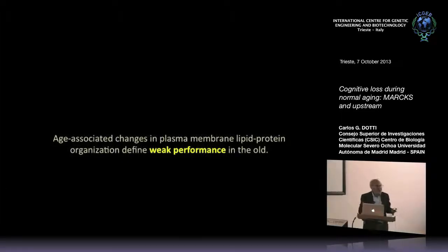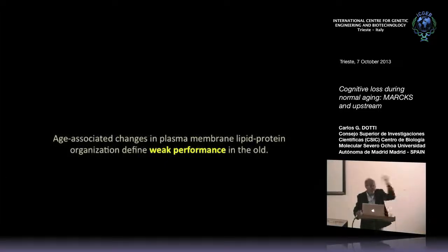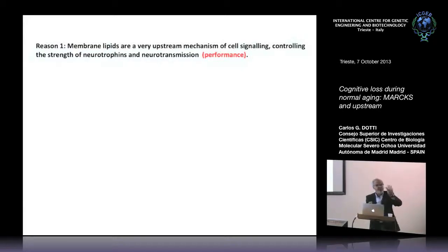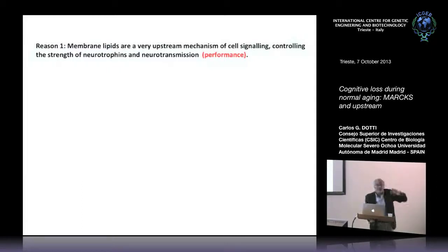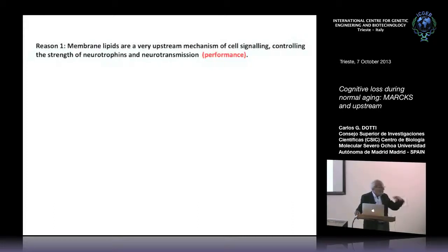It's very simple — people take advantage of things that are part of their past. In my case I have a background on lipid plasma membrane organization during brain construction, so I'm going to look into the deconstruction. Reason number one for choosing lipid membrane domains and organization during aging as a possible responsible element in cognitive loss is that plasma membrane events are very upstream. Neurotransmitter receptors are plasma membrane receptors, and these platforms are involved in cell signaling, controlling the strength of neurotrophins and neurotransmitter receptors. These receptors are part of platforms involved in cognition.